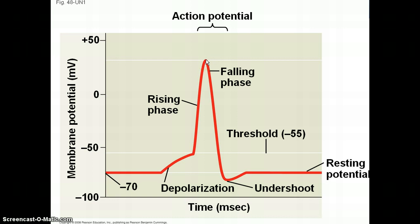At the action potential's peak, voltage-gated sodium channels close, stopping the influx of positive ions. Then potassium channels open and potassium begins to leak out. As potassium leaks out, the cell repolarizes — becomes more and more negative — until you hit the undershoot, where the potassium channels close. Then, due to continued ion permeability, you get potassium leaking out again and return to the resting potential, with background potassium leakage and the sodium-potassium pump continuing to work.